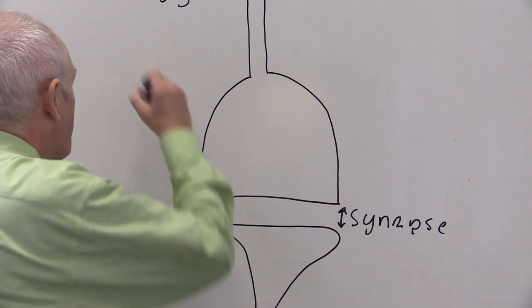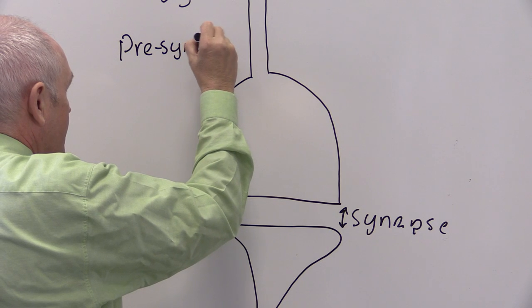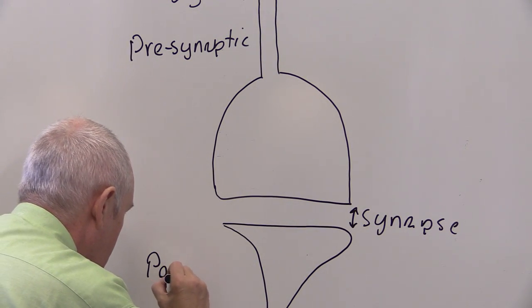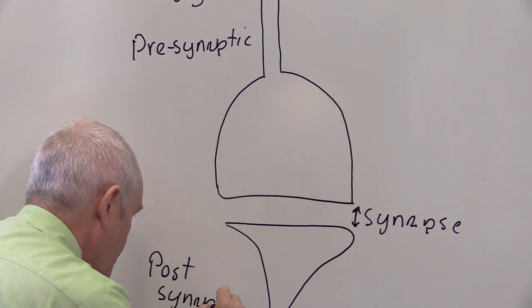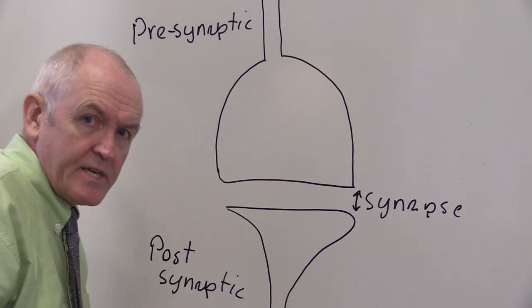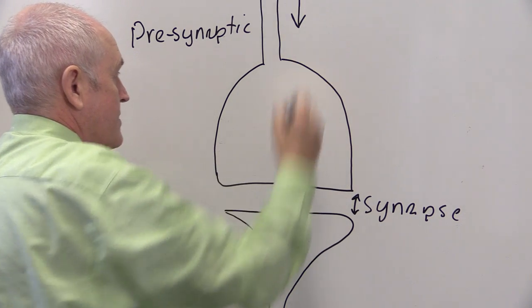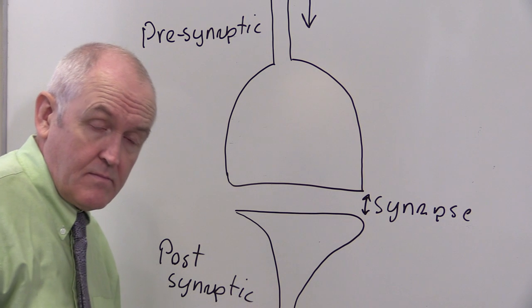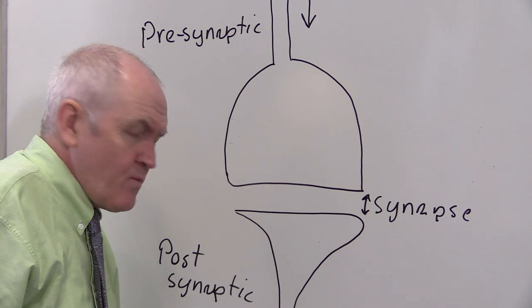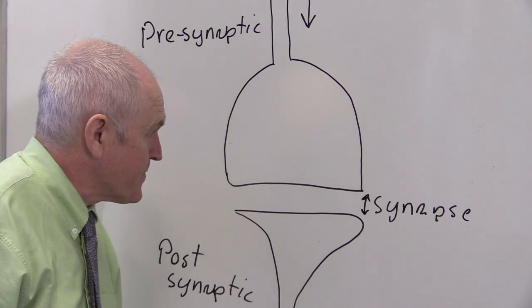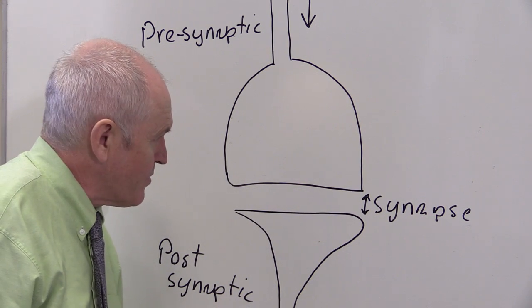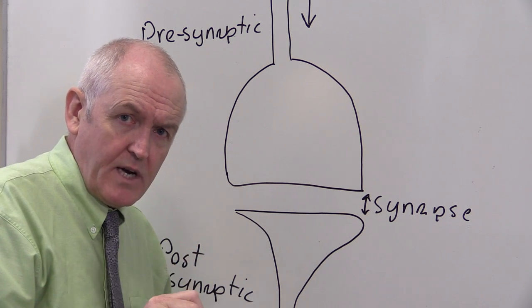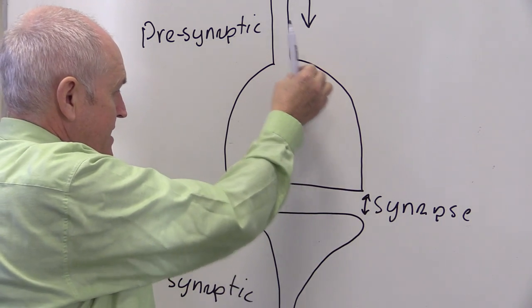This will be the pre-synaptic neuron — before the synapse — and this will be the post-synaptic neuron, after the synapse. When an electrical nerve impulse travels down the pre-synaptic neuron, we want it to get from the pre-synaptic to the post-synaptic neuron. A fundamental principle of the nervous system is one-way transmission: nerve impulses must only travel in one direction.